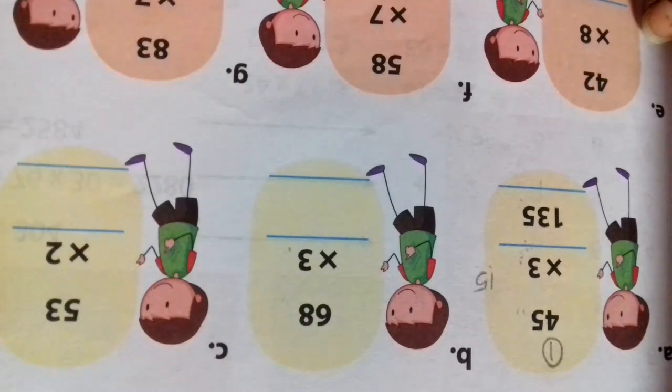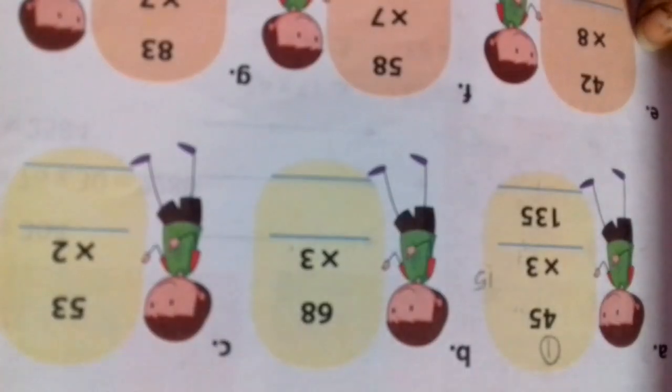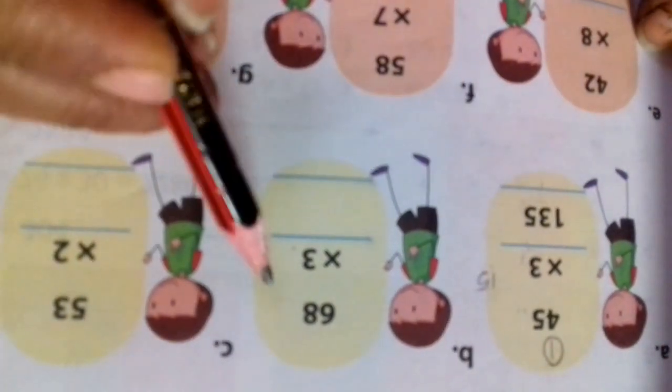3 ones are 3, 3 twos are 6, 3 threes are 9, 3 fours are 12, 3 fives are 15, 3 sixes are 18, 3 sevens are 21, 3 eights are 24.